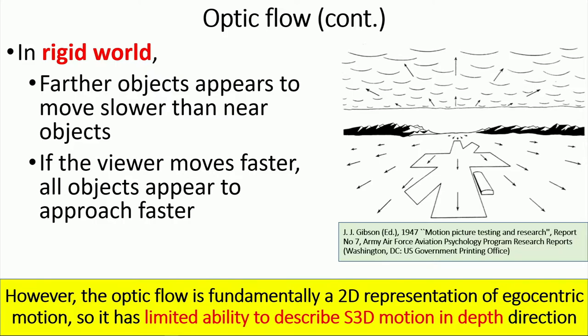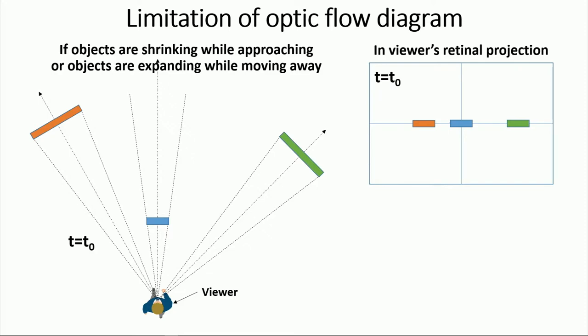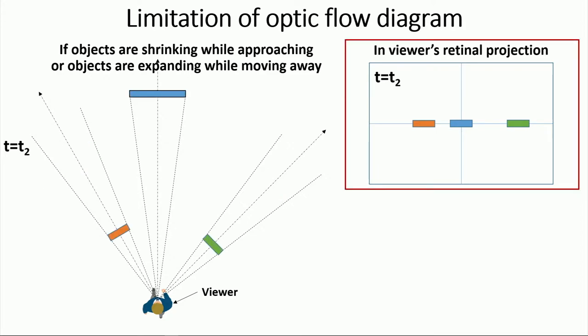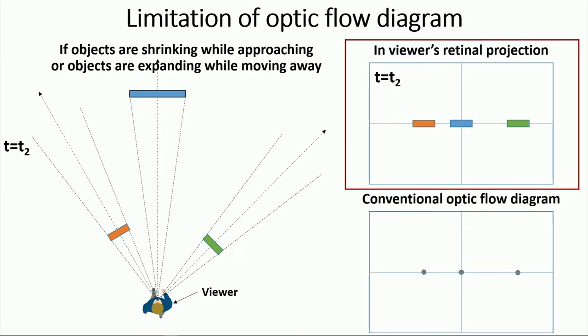However, the optic flow is fundamentally a 2D representation of egocentric motion, so it has a limited ability to describe the motion in depth. Here is an example of such limitation. If objects are shrinking or expanding while approaching to or moving away from the viewer, at the rate inverse of the natural depth size change ratio, objects will take the same area in the viewer's retina, and conventional optic flow diagrams will show no motion at all. However, as we know, if something is moving, our stereo depth cue will catch the motion and notify our brain that they are moving in the depth direction.